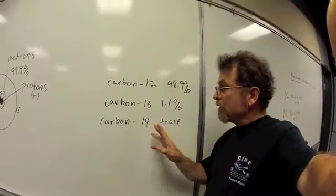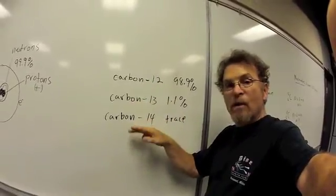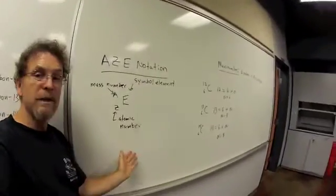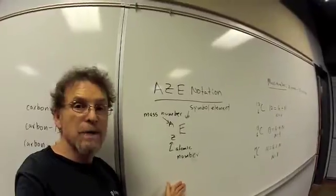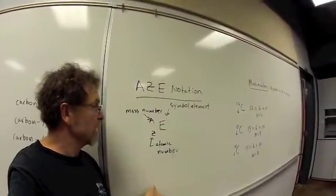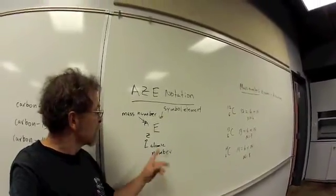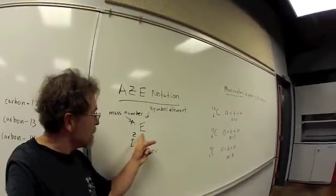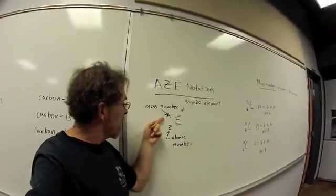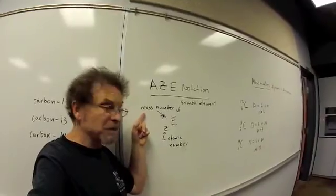Now, what I want to do next is look at each one of these different isotopes and determine exactly what makes them different. To do that, we need to talk about what's called A-Z-E notation. Because this is the way that we're going to represent or symbolize a particular isotope of a given element. First off, we're going to define the capital E as being the symbol of the element. And you'll notice that up and left of that is capital A. This is a reference to what we call mass number.